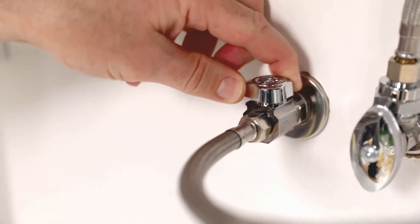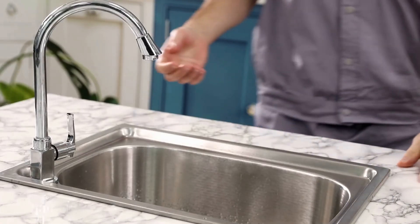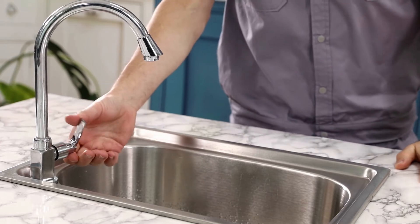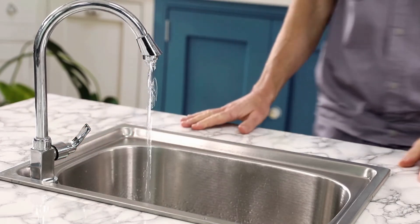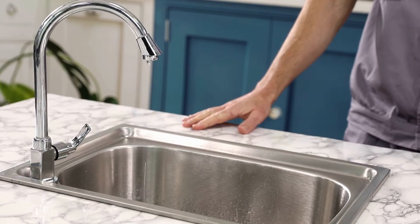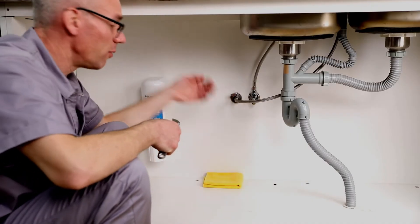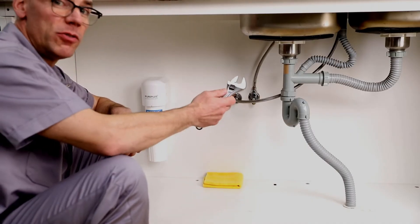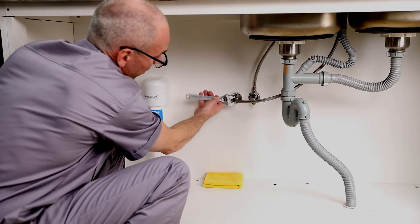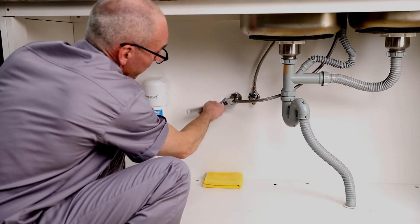Next, turn off the water inlet valve. Leave the faucet on until the water stops flowing. Place a towel under the water inlet valve to catch any dripping water. Use the adjustable wrench to disconnect the faucet hose from the water inlet valve.